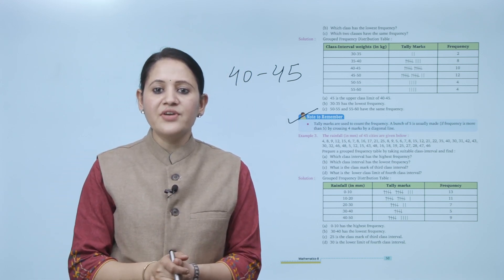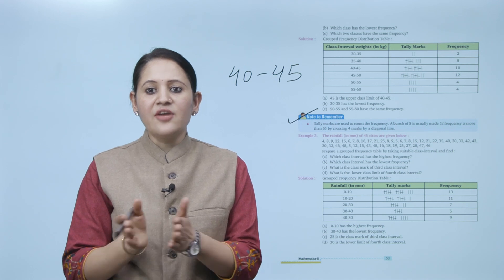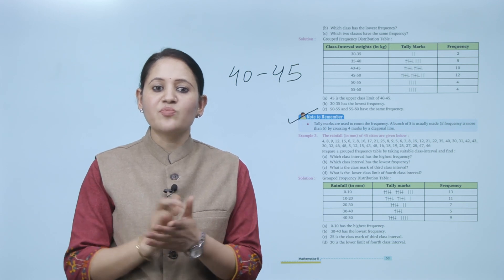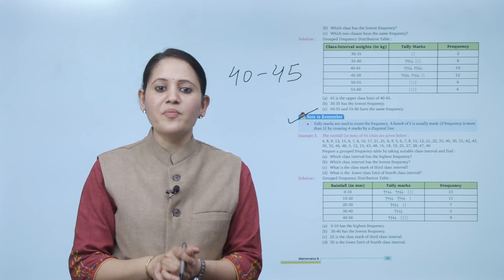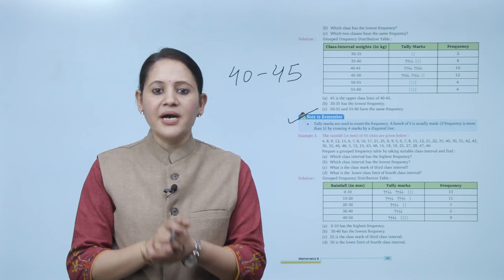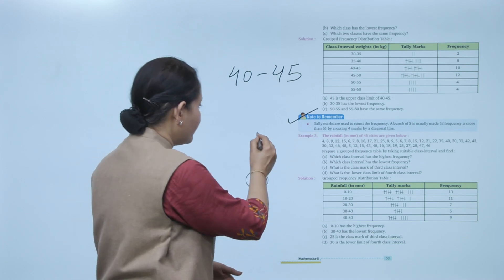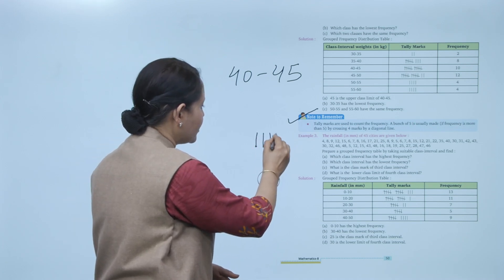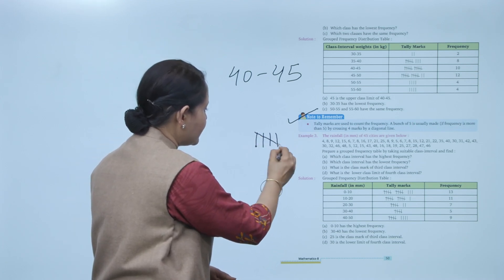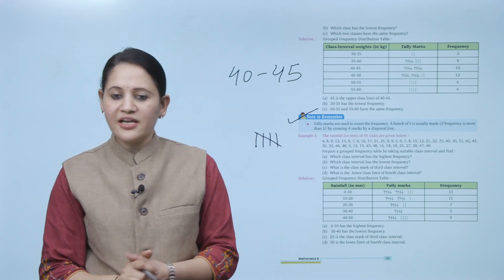Note to remember: tally marks are used to count the frequency. A bunch of 5 is usually made if frequency is more than 5, by crossing 4 marks with a diagonal line. So 1, 2, 3, 4, and a diagonal cross represents 5.